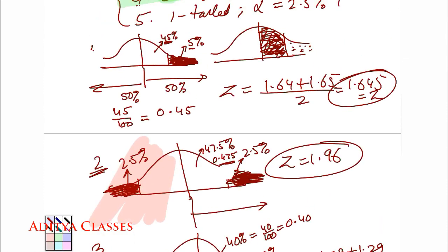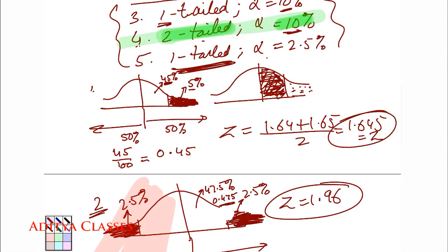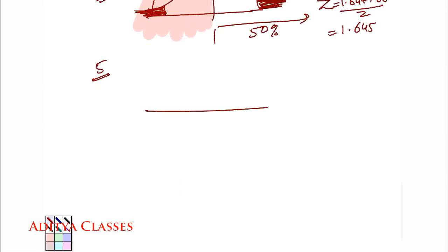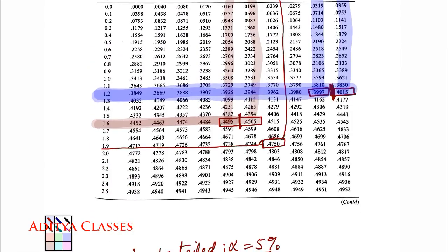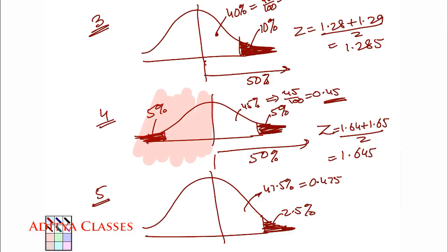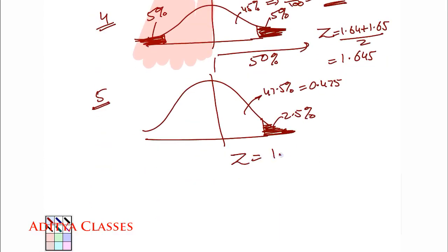Now I believe last one you can do on your own, what is that, it is one tailed and 2.5%. You can pause the video over here, solve this for yourself and then check if you have done it well. So one tailed 2.5%, one tailed, rejection is in one tail. How much rejection? 2.5%, giving me 47.5% or making it 0.475. So I go up and check what is the value of z for 0.475. It is 1.96. So my z value comes as 1.96.